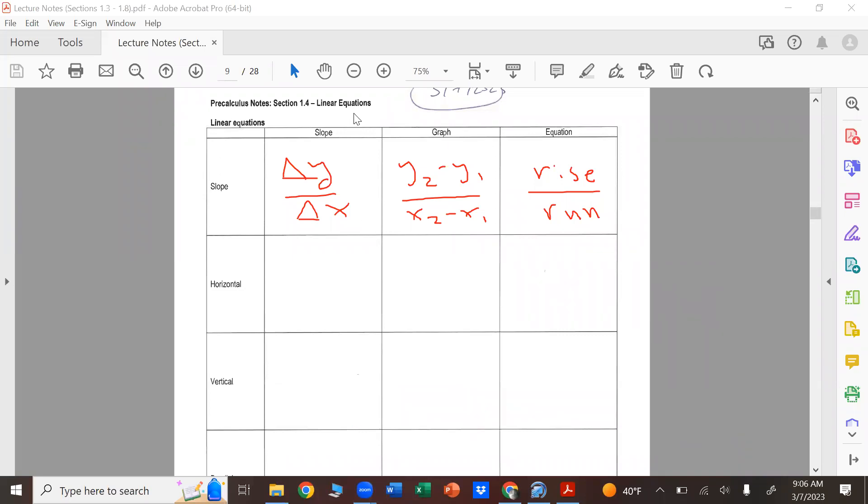Horizontal lines - what slope do horizontal lines have? It'll be zero, yeah, because graphically it looks like this. And equation-wise you'd say y equals some number, like maybe y equals 2, y equals 3, y equals 4. That's 100% what it says.